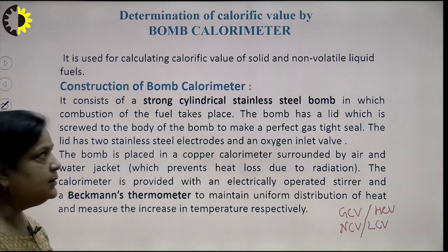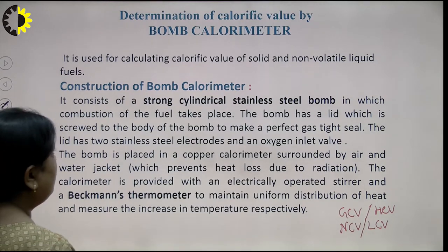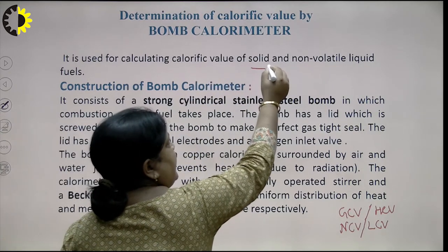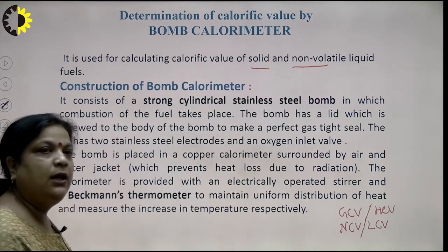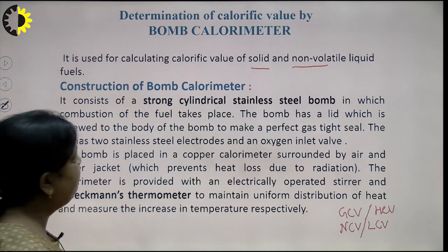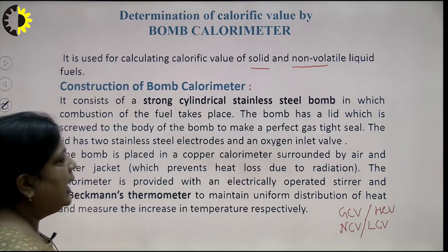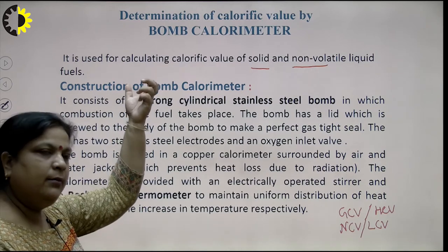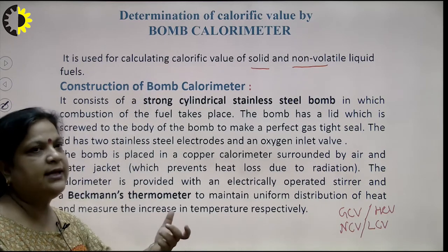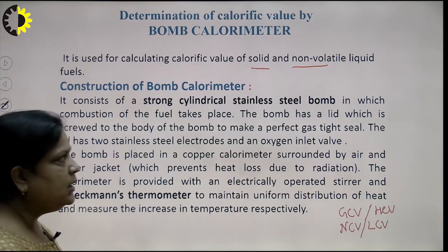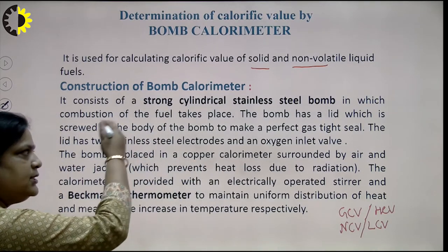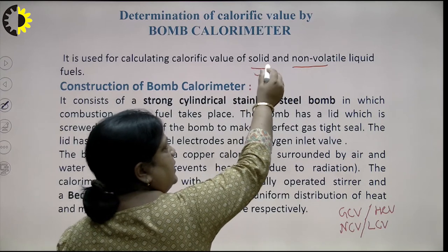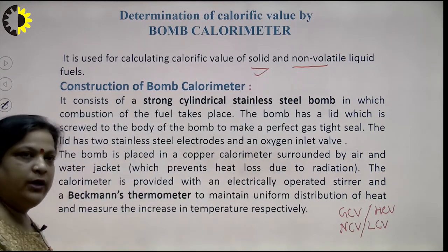In the bomb calorimeter method, it is used to calculate the calorific value of solid and non-volatile liquid fuels. And if the fuel is volatile, then instead of the bomb calorimeter, the Boys gas calorimeter is used. So it is clear that for this calorimeter, we have to take a fuel that is either in solid state or non-volatile liquid state.